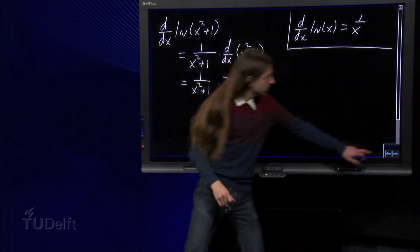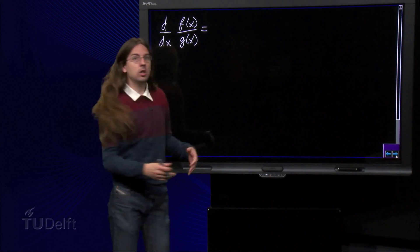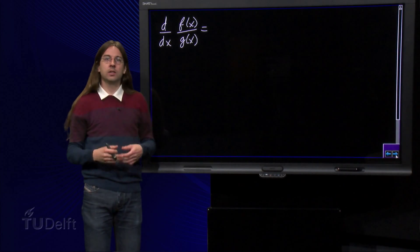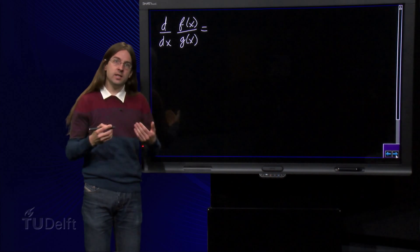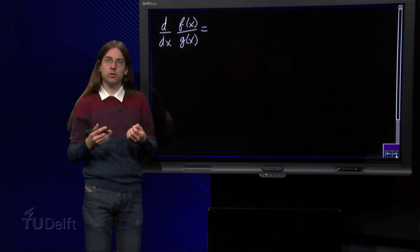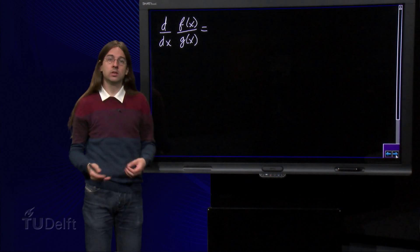Finally, the derivative of f over g is often given as an extra rule, the quotient rule. It's easiest to think of this as a combination of the chain rule and the product rule.